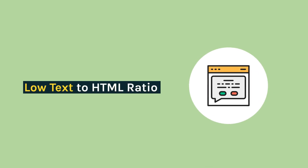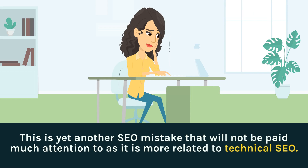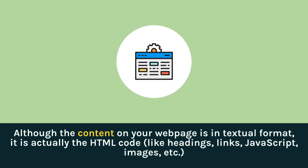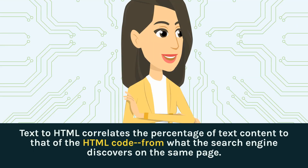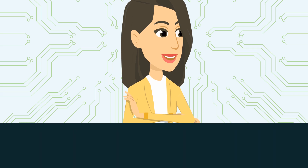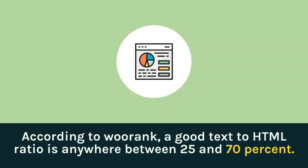Low text to HTML ratio is yet another SEO mistake that will not be paid much attention to, as it is more related to technical SEO. Although the content on your web page is in textual format, it is actually the HTML code — like headings, links, JavaScript, images, etc. — that underlies it. Text to HTML correlates the percentage of text content to that of the HTML code found on the same page. According to Warank, a good text to HTML ratio is anywhere between 25 and 70 percent.